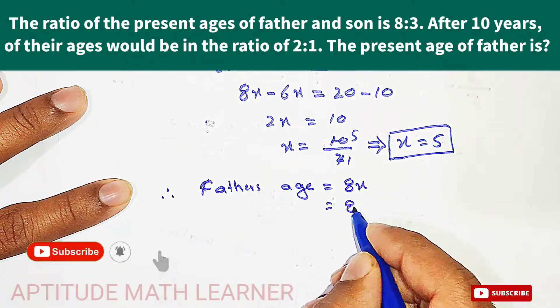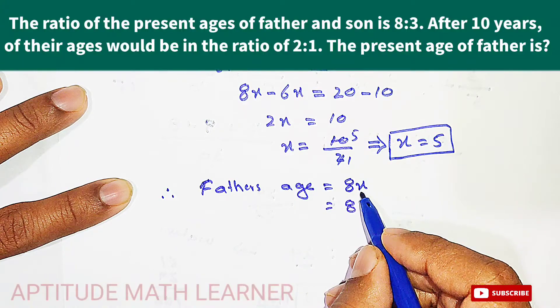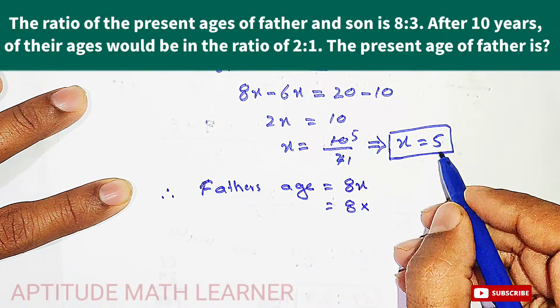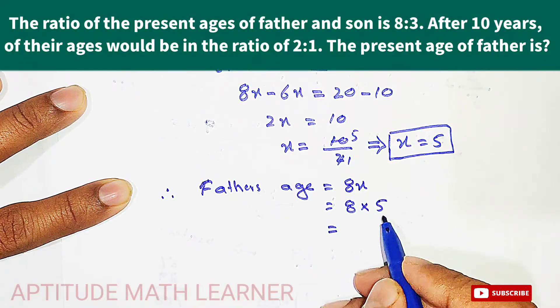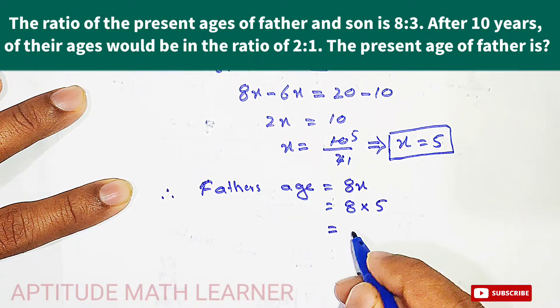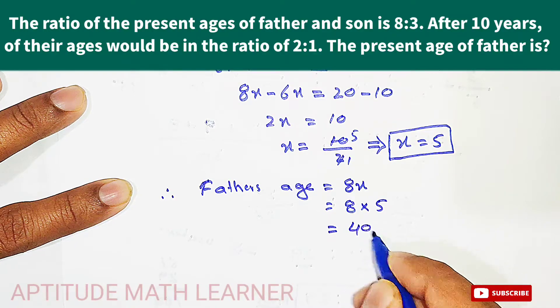The ratio of the age for father at present is 8x. So here we get 8 times x. 8 multiplied by x—the value of x we are having is 5—so this becomes 8 multiplied by 5. We get here the answer, that is 40.